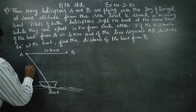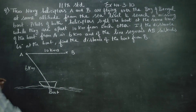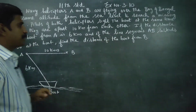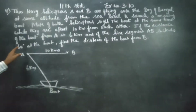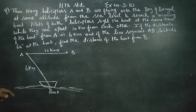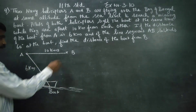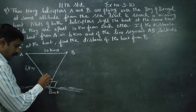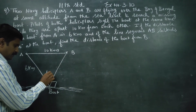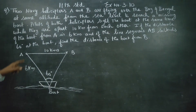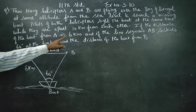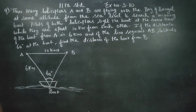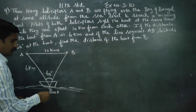— is 6 kilometers. If the line segment AB subtends an angle of 60 degrees at the boat, find the distance of the boat from B.